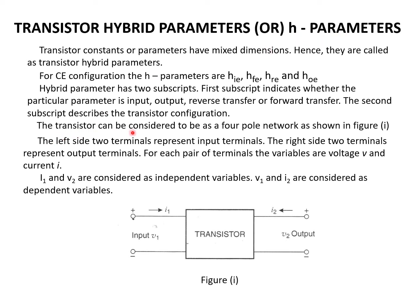The transistor can be considered as a four-pole network. There are two poles in the input circuit and two poles for the output circuit. The left side two terminals represent input terminals and the right side two terminals represent output terminals. For each pair of terminals, the variables are voltage and current. I1 and V2 — that is, input current and output voltage — are said to be independent variables.